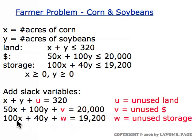Similarly with regard to storage space, we add another slack variable to represent possibly unused storage space. 100X represents the storage space used for corn, 40Y is the storage space used for soybeans, plus whatever leftover storage space there is accounts for all 19,200 bushels of storage.